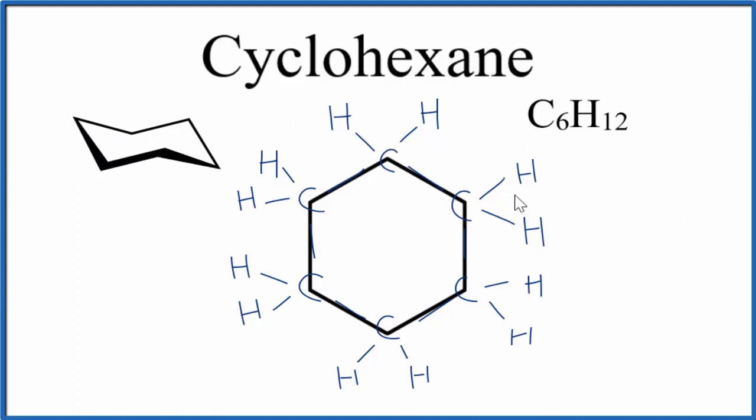But either way, this is the structure for cyclohexane, the formula, molecular formula, C6H12. And this is Dr. B. Thanks for watching.